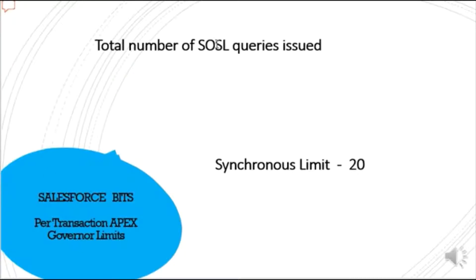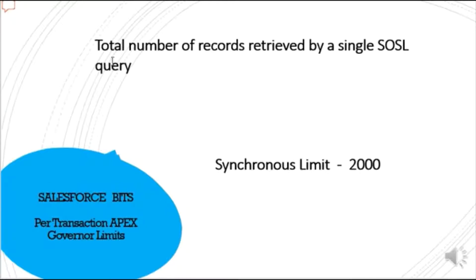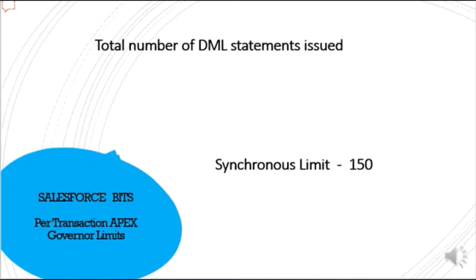Total number of SOSL (Salesforce Object Search Language) queries that you can issue is 20. Next, the total number of records retrieved by a single SOSL query — a SOQL query can retrieve 50,000 records, but SOSL queries can retrieve only 2,000 records.